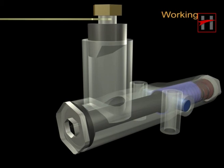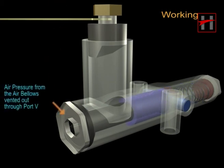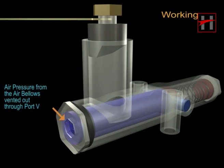Because of this, the air pressure from the air bellows is vented out into the atmosphere through port V.